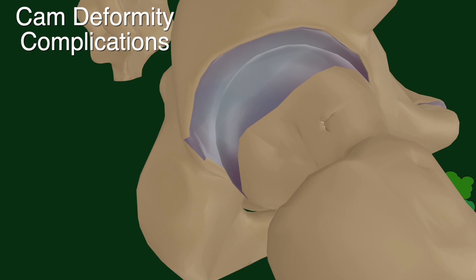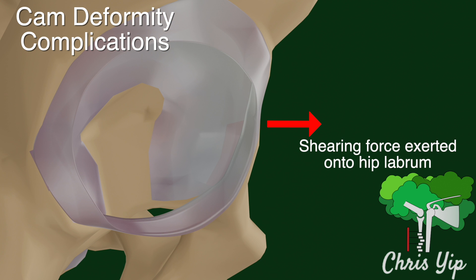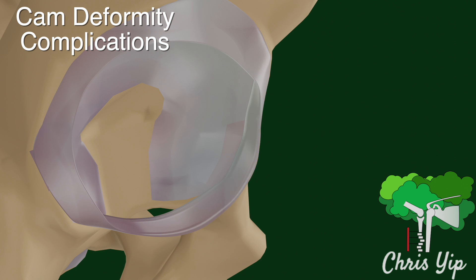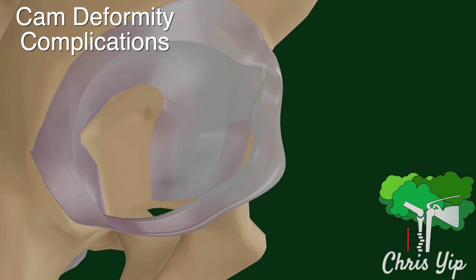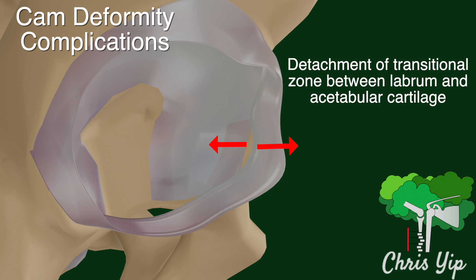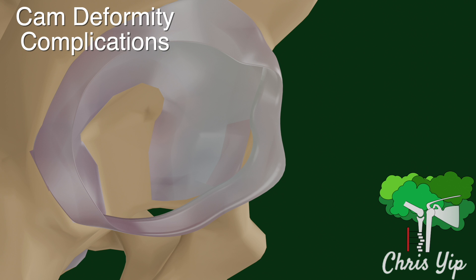During hip flexion, the aspherical head creates a shearing force along the acetabular cartilage. This causes the labrum to be pushed outwards, leading to a tearing of the transition zone between the labrum and the acetabular cartilage. As these are detached, there can be a peeling of the articular cartilage known as chondral delamination, resulting in a loose flap of cartilage.